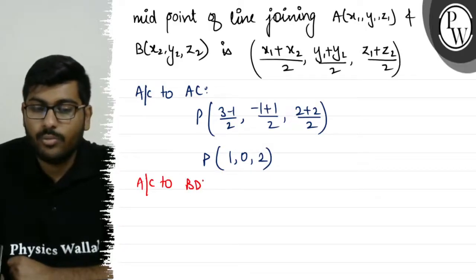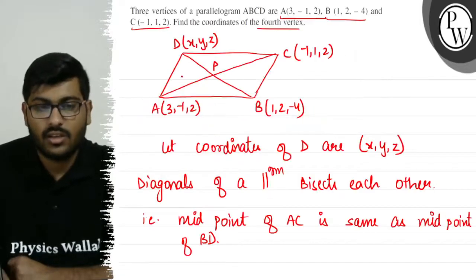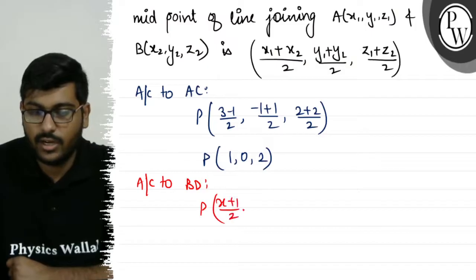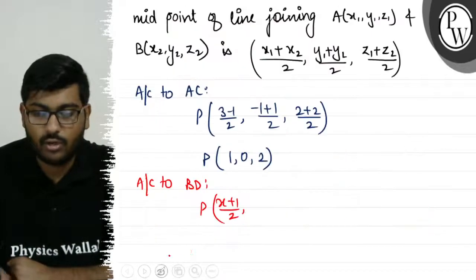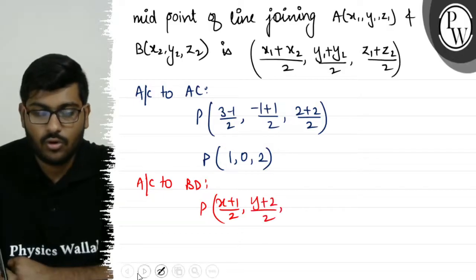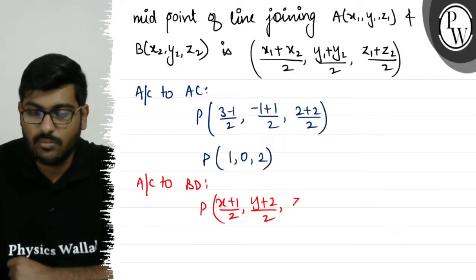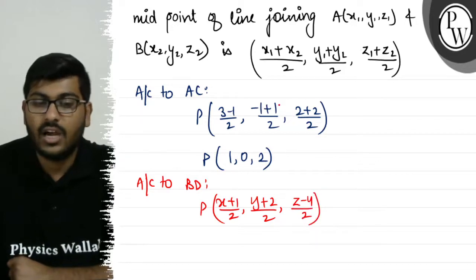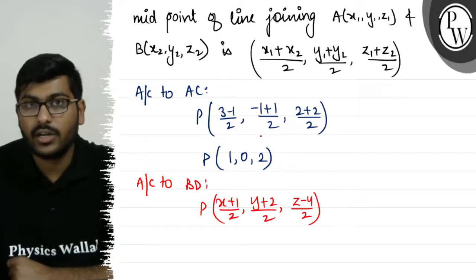Now according to diagonal BD, if we look at vertex D with coordinates (x, y, z), then the midpoint of BD is: (x + 1)/2, (y + 2)/2, (z + (-4))/2, that is (x+1)/2, (y+2)/2, (z-4)/2. This is also the midpoint P.